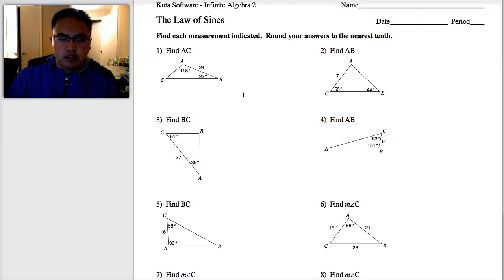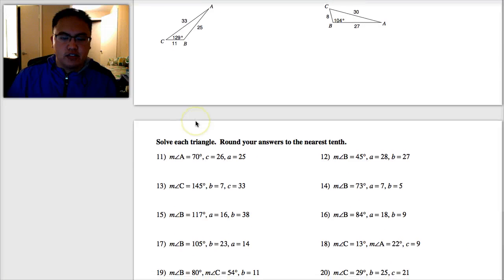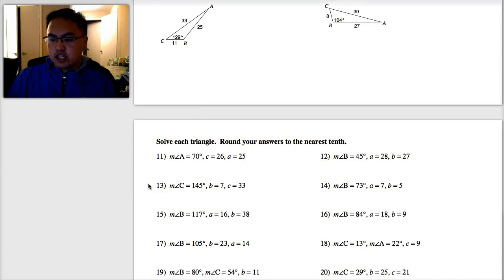Find each measurement, find the measure of what they're looking for, like AC, BC, whatever. And then solving triangles. So these two sections, within the 50 minutes, you guys can do.